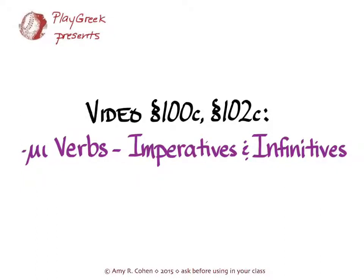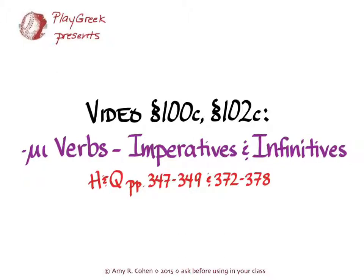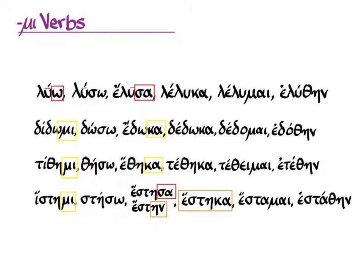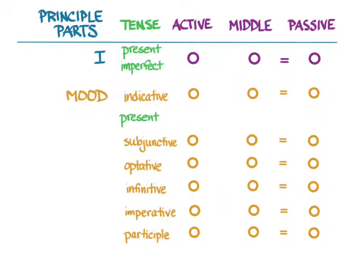This video goes with the last portions of sections 100 and 102 of Hanson and Quinn's Greek and Intensive Course, and it covers μι-verbs in the imperative and the infinitive. In Hanson and Quinn, you can find these topics on pages 347 to 349 and 372 to 378. Μι-verbs are different from thematic verbs in their first principal parts, their third principal parts, and in the case of ἵστημι, in their fourth principal parts. Because it's those principal parts that we are concerned with, we only have to worry about the things that those principal parts do. We've now covered the indicative from the first principal part, as well as the subjunctive and the optative, in earlier videos.